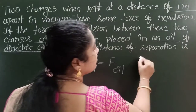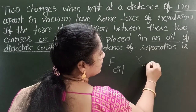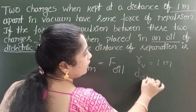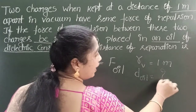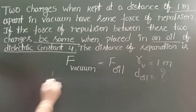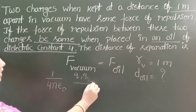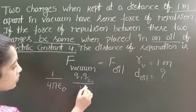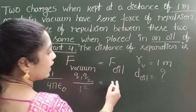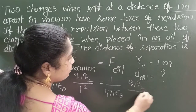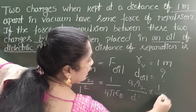When placed in vacuum, the distance of separation is equal to 1 meter, and in the oil medium we want to find the distance — let it be D. Now, in vacuum, by using Coulomb's law: (1 / 4πε₀) × (q1 × q2) / (1²) equals, in oil, (1 / 4πε₀) × (q1 × q2) / (d² × K).